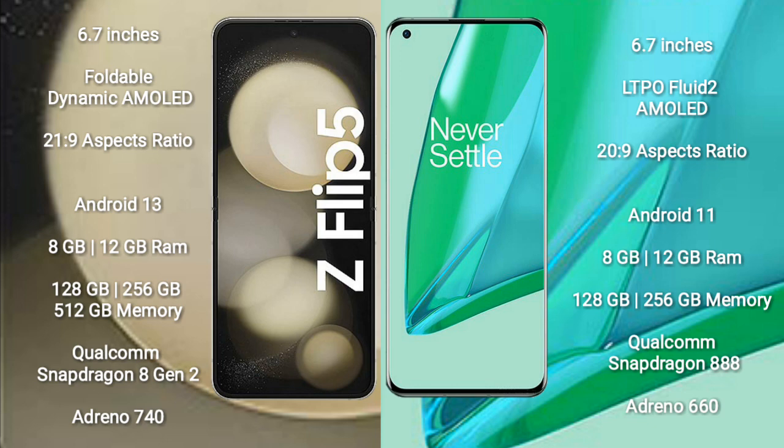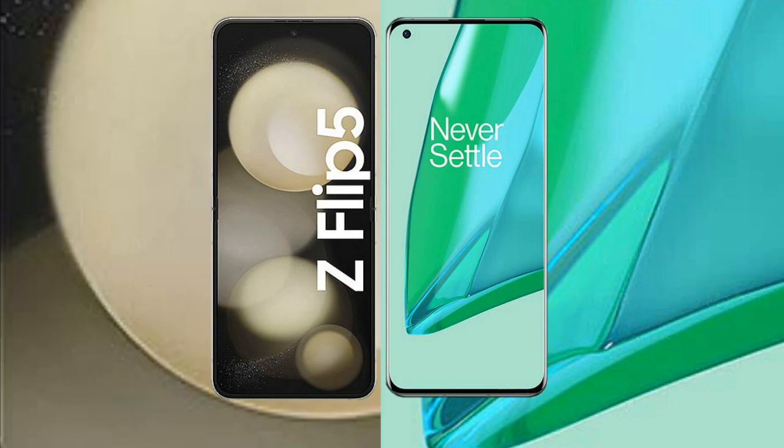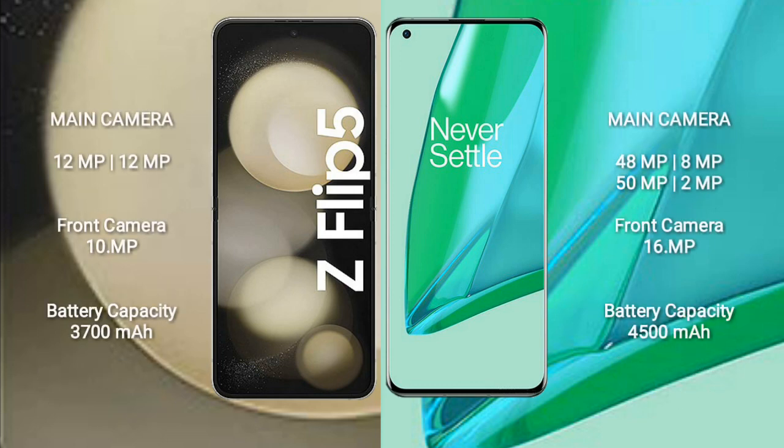Samsung Galaxy Z Flip 5 comes with 8GB or 12GB RAM and 128GB to 256GB internal storage, Qualcomm Snapdragon 8 Gen 2 processor and GPU Adreno 740. OnePlus 9 Pro comes with 8GB or 12GB RAM and 128GB to 256GB internal storage, Qualcomm Snapdragon 888 processor and GPU Adreno 660.